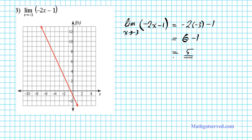Now graphically, what does this mean? We're approaching negative 3 from both sides since there are no directions indicated. All we do is take the x value we're approaching, trace it to the function, and we notice that we have a defined point. The coordinates of that point are negative 3 and 5. So as you're getting arbitrarily close to negative 3 from both sides, the limit is the y value that you're approaching, namely 5. As you get closer and closer to negative 3 from both sides, you notice that you're approaching the same y value, which is positive 5. That shows that our answer is correct.